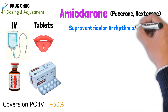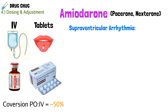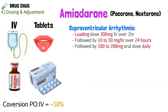For supraventricular arrhythmia dosing, we want to give a loading dose of 300 milligrams IV over the first hour. Then we titrate that down to 10 to 50 milligrams per hour over 24 hours. After that, we could let the patient go home with 100 to 200 milligram tablets daily. That's for the supraventricular arrhythmias — remember, the top of the heart.